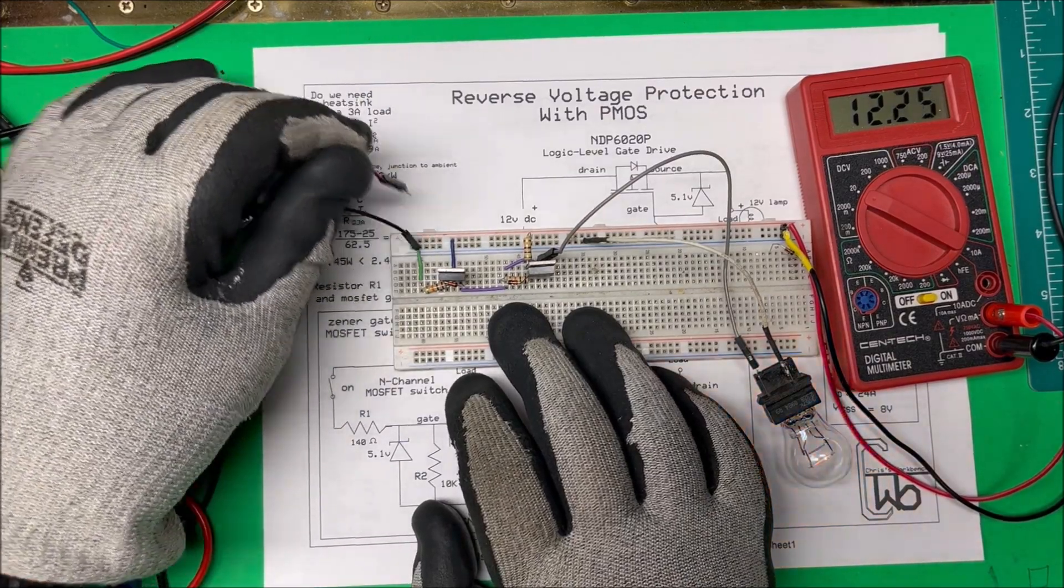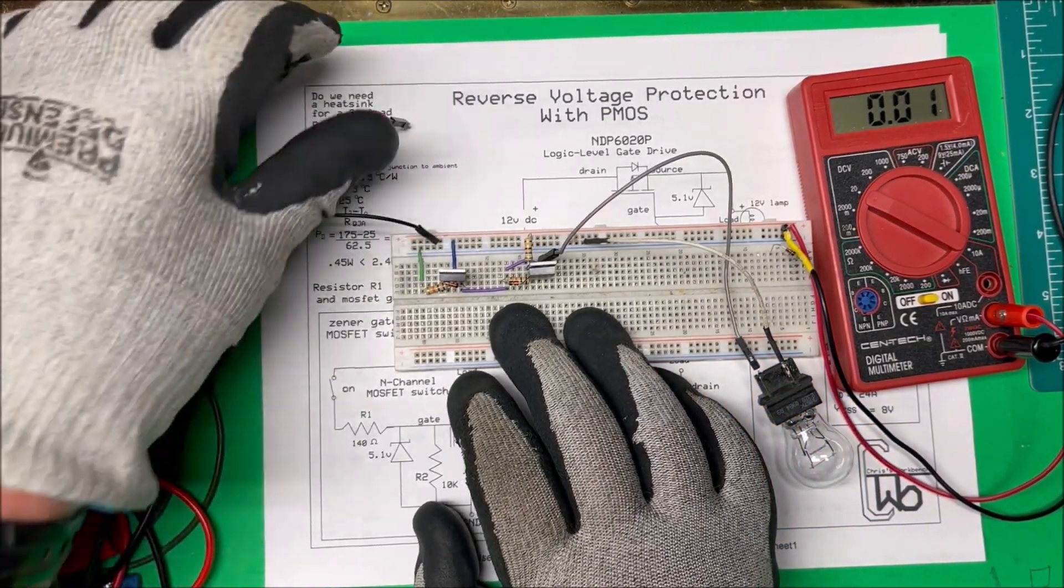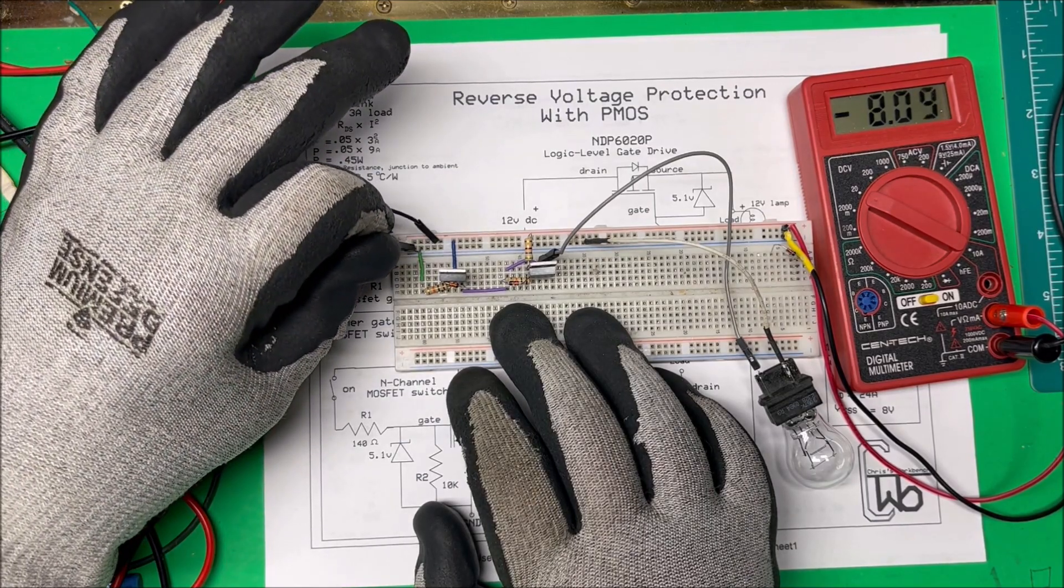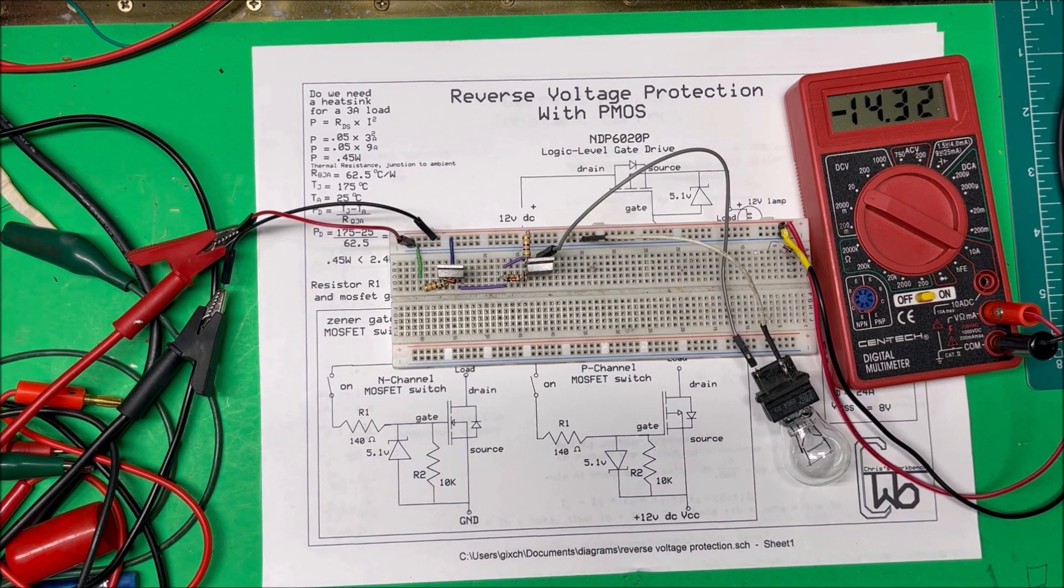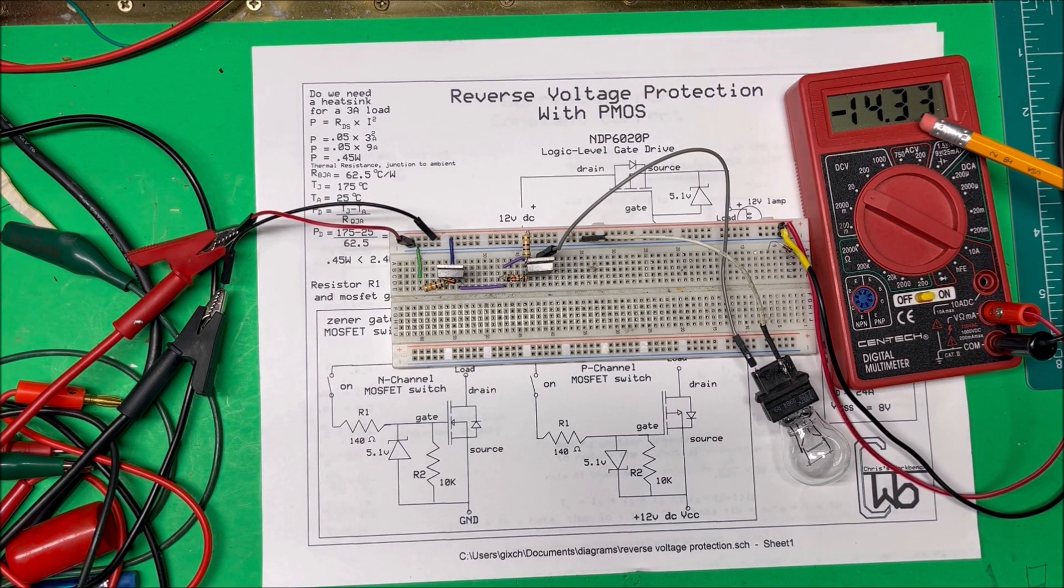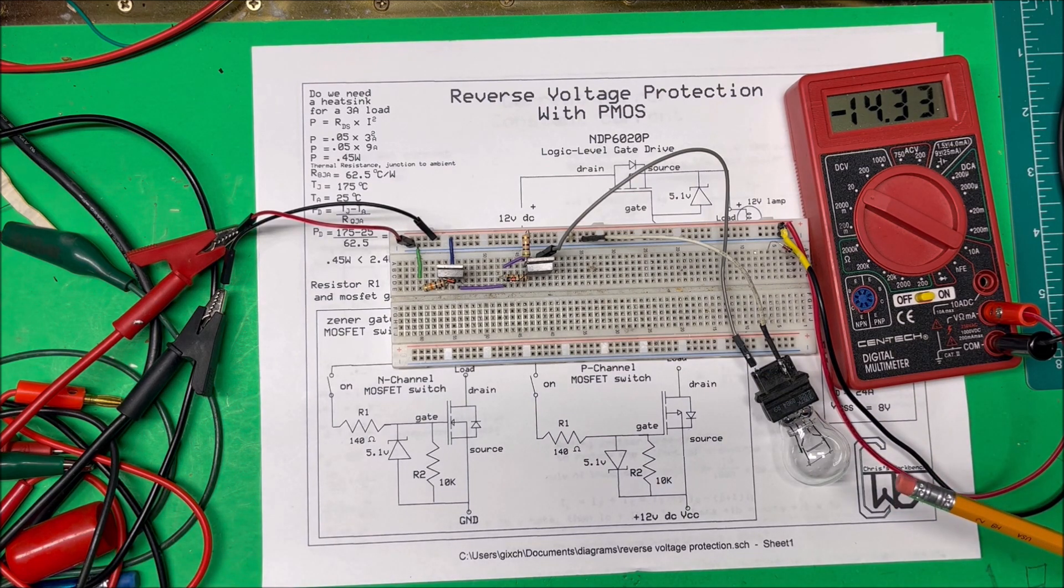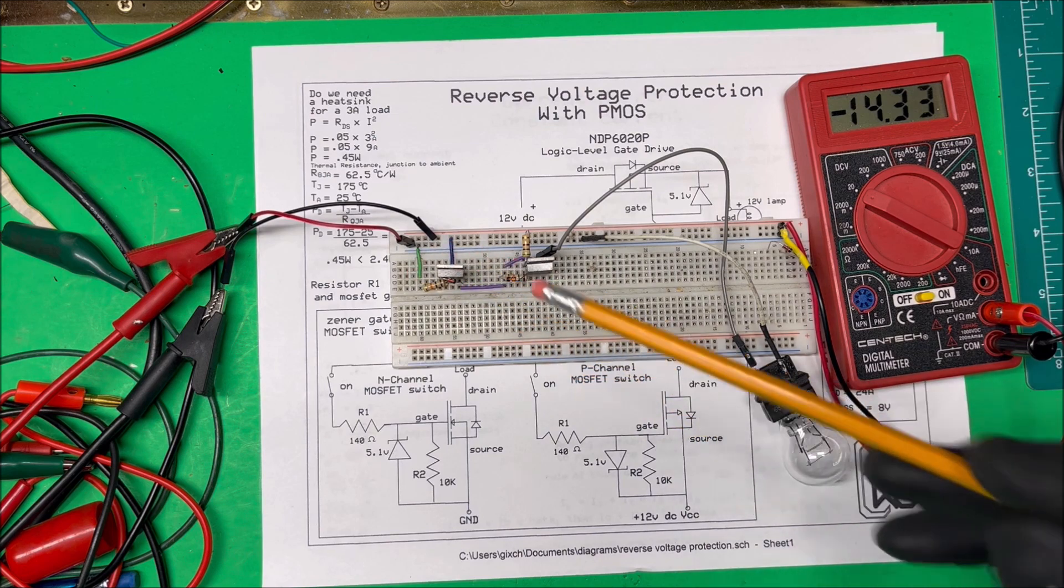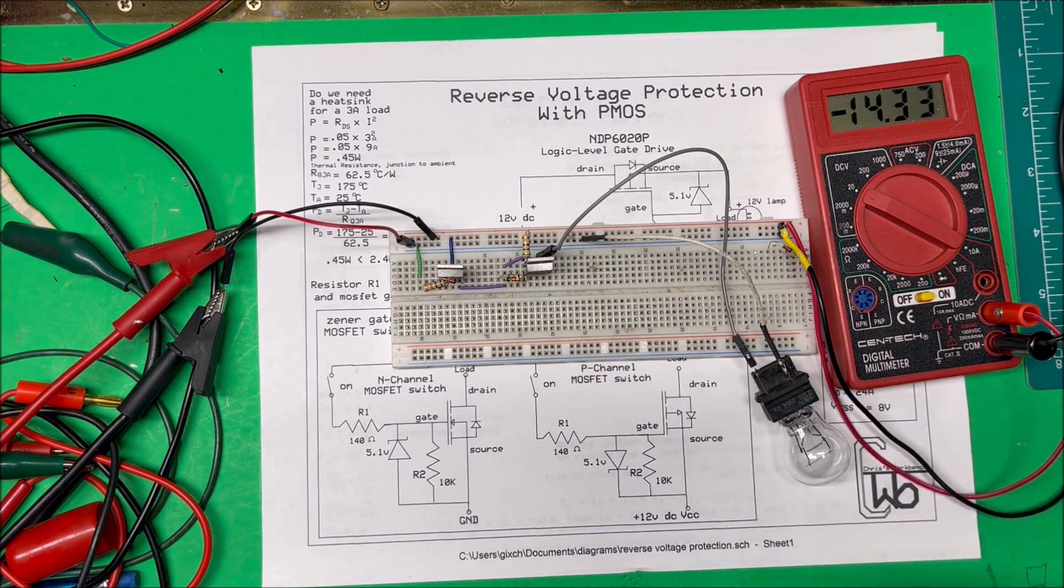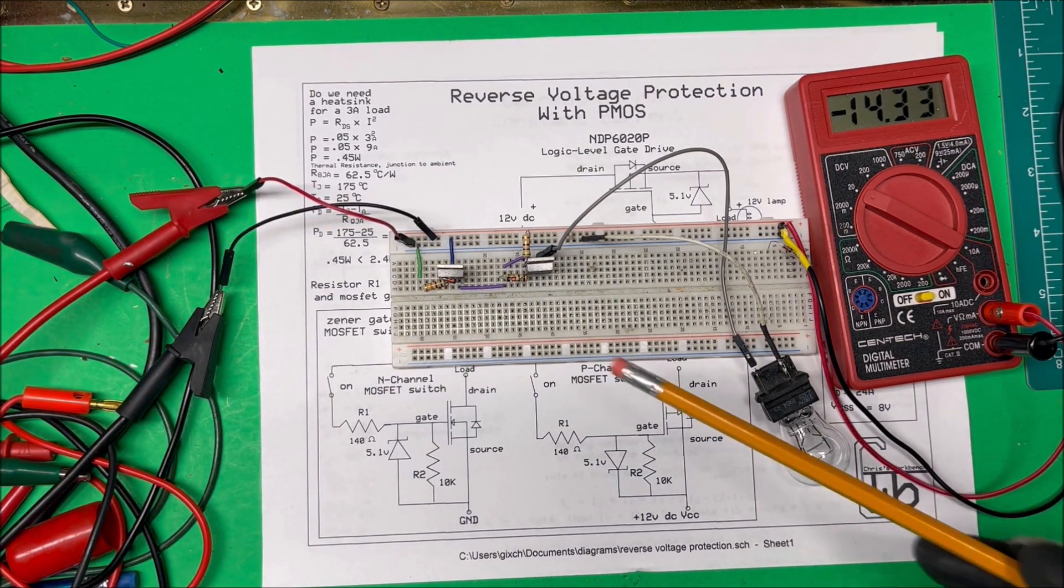I'm going to unplug it and put the reverse in here, and there we go. Current went up a little bit, I got negative 14 volts, the light doesn't light up, and I'm not wrecking anything in my circuit here. So a good little unit to protect your circuit, because I've hooked up leads wrong several times and burnt stuff up.